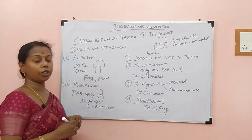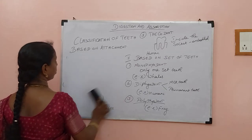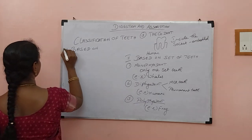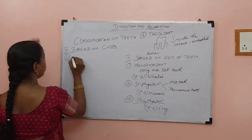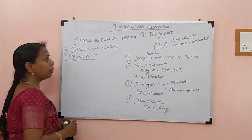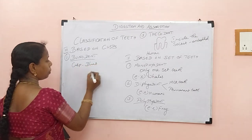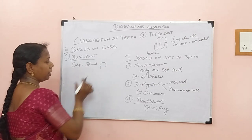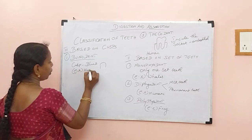Now we are going to classify teeth based on the cusp. The first one is bunodont. In bunodont, the cusp is somewhat blunt — not sharp, it is a blunt cusp that we can find. So the teeth structure is blunt and we will be having this. Example: human. So it may be used only for grinding.